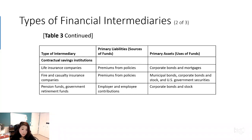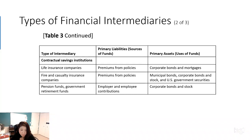For life insurance, you purchase it against the financial hazard following death. For fire and casualty insurance, you purchase it against loss from theft, fire, and accidents — if you don't have any accidents, your premium won't come back to you. The third type is the pension fund and government retirement fund, which provides retirement income in the form of an annuity to employees covered by the pension plan. Both you and your employer contribute to this fund, and since there is no liquidity issue, pension funds usually invest in corporate bonds and stocks.